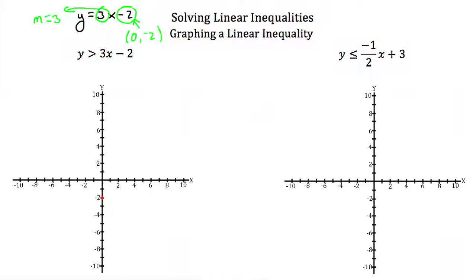Our slope is 3, which means a rise of 3 and a run of 1. So if we go up 3 and over 1, we get a point, and doing that again gives us another point. We have our 3 points and can graph our line. But going back to the inequality, this is a greater than — not greater than or equal to. So the boundary line does not represent solutions, meaning we graph it with a dotted line to show it's just a boundary and not an actual solution.